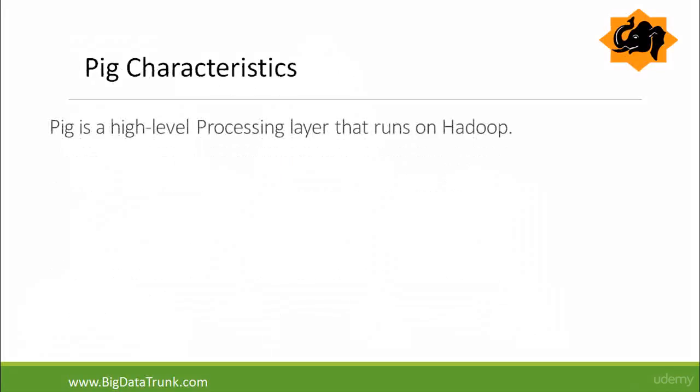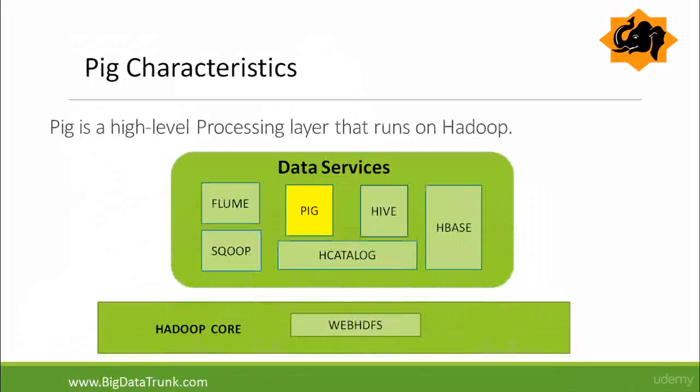Pig is a high level processing layer that sits on top of Hadoop and it makes use of both the Hadoop distributed file system and Hadoop's processing system MapReduce. It provides an engine for executing data flows in parallel on Hadoop. It uses MapReduce to execute all of its data processing, and internally the Pig code is converted into MapReduce.